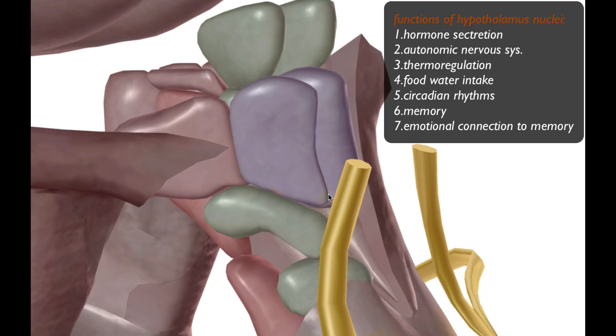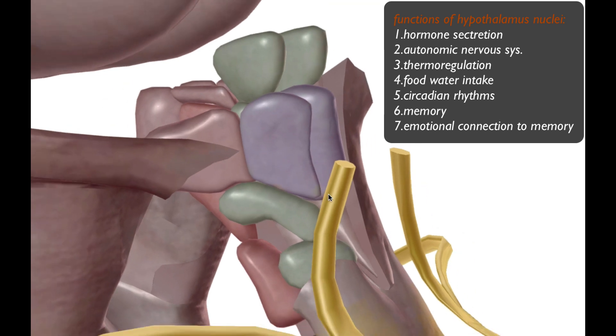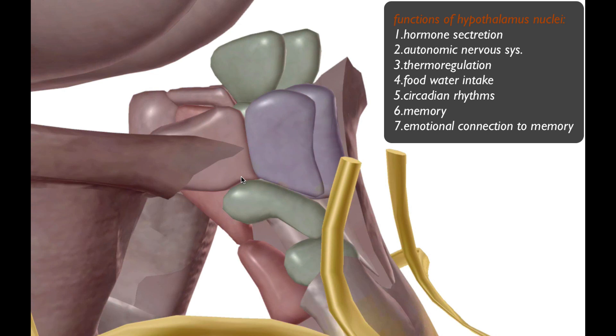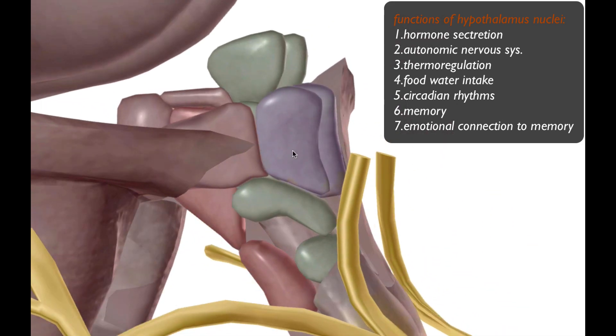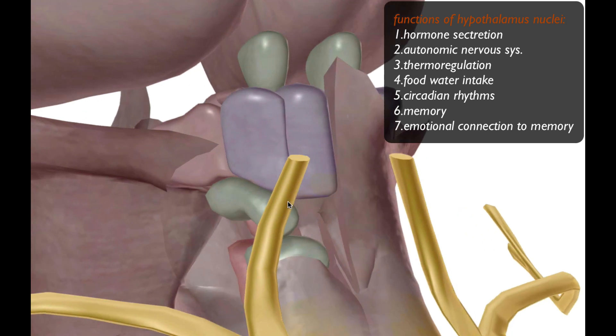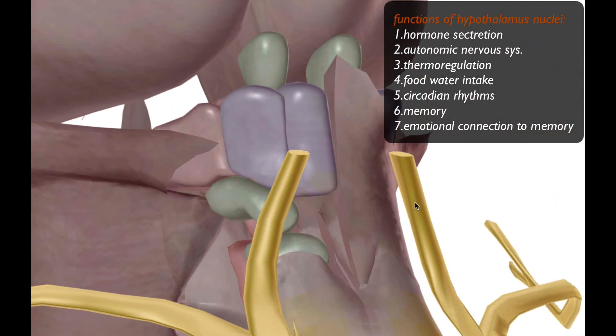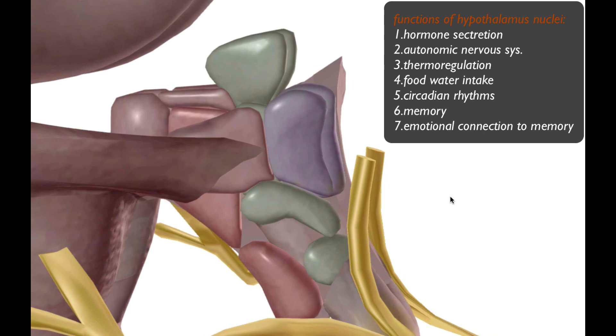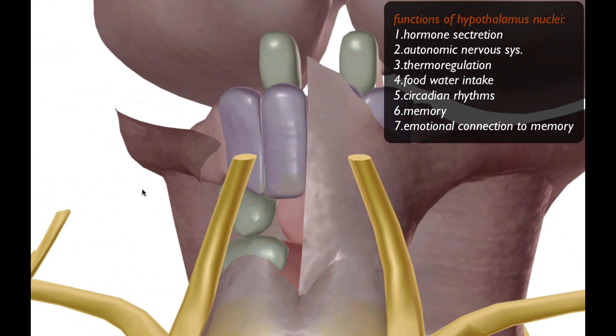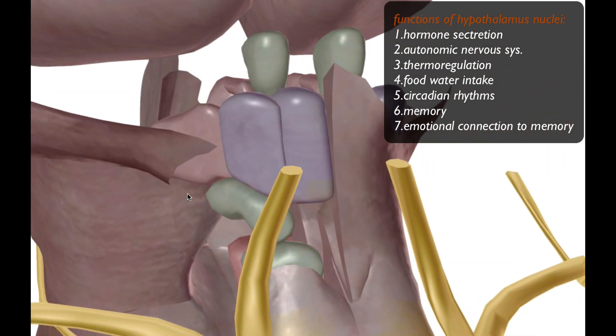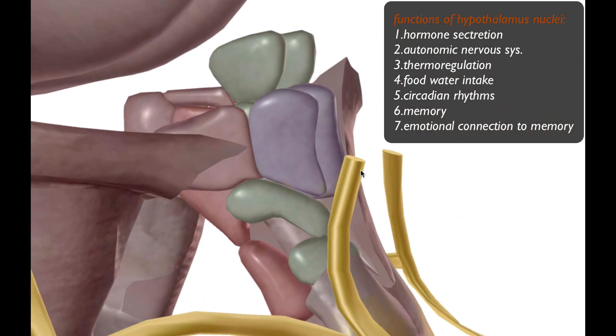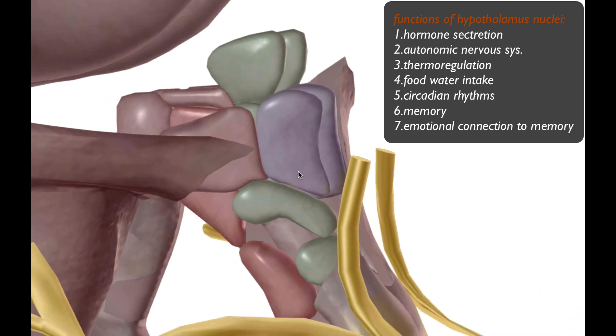Just to summarize some of the functions of these nuclei: hormone secretion, controlling the autonomic nervous system, thermal regulation—this is your body's thermostat. When you're taking Tylenol, Tylenol affects the hypothalamus in reducing a fever, for example. Your food and water intake, circadian rhythms—producing serotonin that will help you sleep, memory, the emotional connections that you have with memory. This is part of a larger system called the limbic system where your emotional centers produce anger and positive feelings towards things.